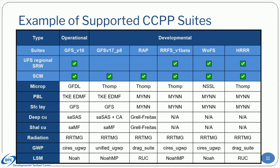The CCPP parametrizations are used by host models in suites, and a selected number of suites are supported in a given CCPP public release. The first CCPP release was in 2018, and since then one or two releases have been issued per year. Typically a release has both operational and developmental suites. In this example, only suite GFS version 16 is operational. The single column model can be used with all suites, while the UFS short-range weather application can be used with a subset of the suites.